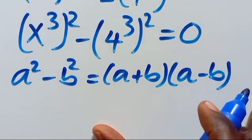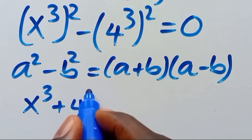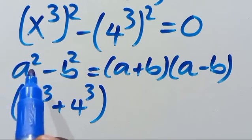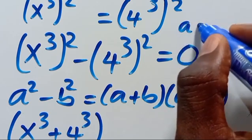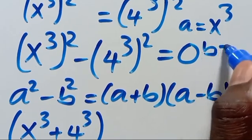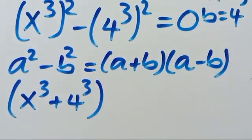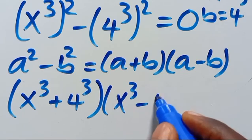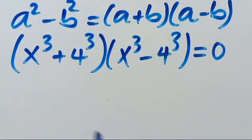Recall that a squared minus b squared equals (a plus b)(a minus b). Equating our expression, we have a equals x cubed and b equals 4 cubed. So this gives us (x cubed plus 4 cubed) times (x cubed minus 4 cubed) equals 0.